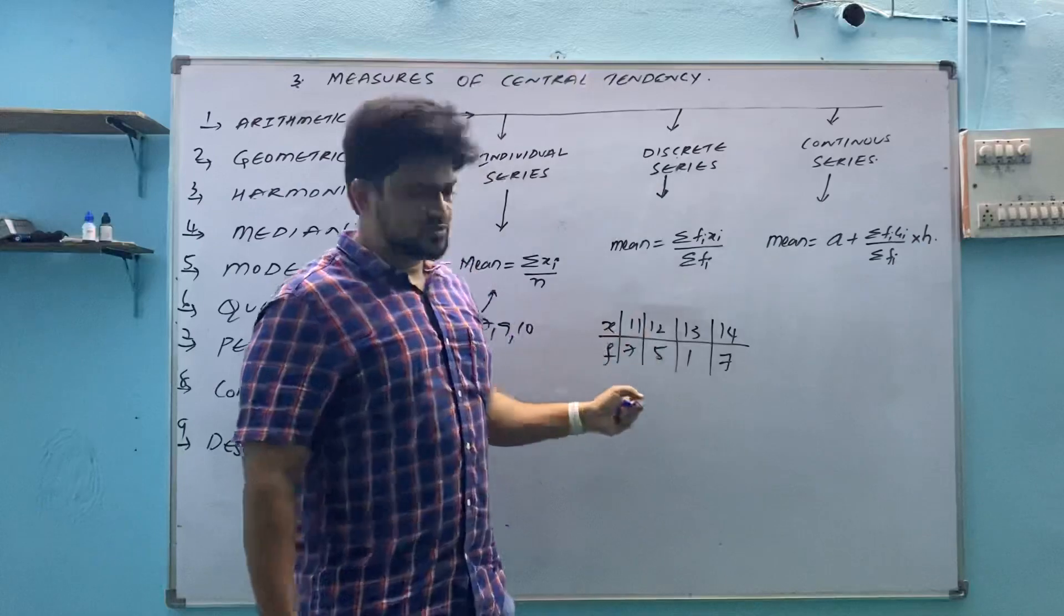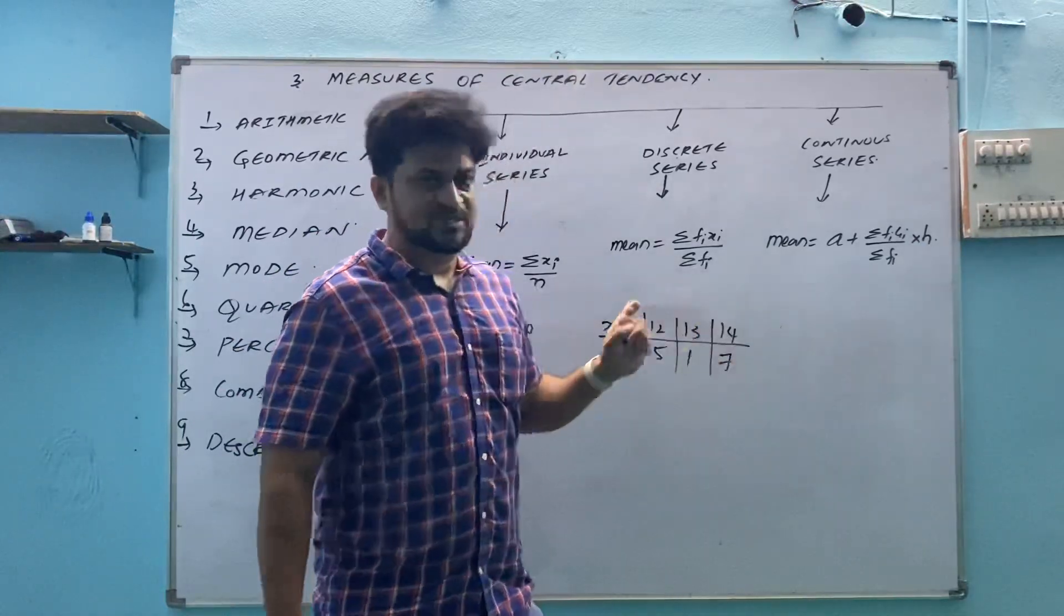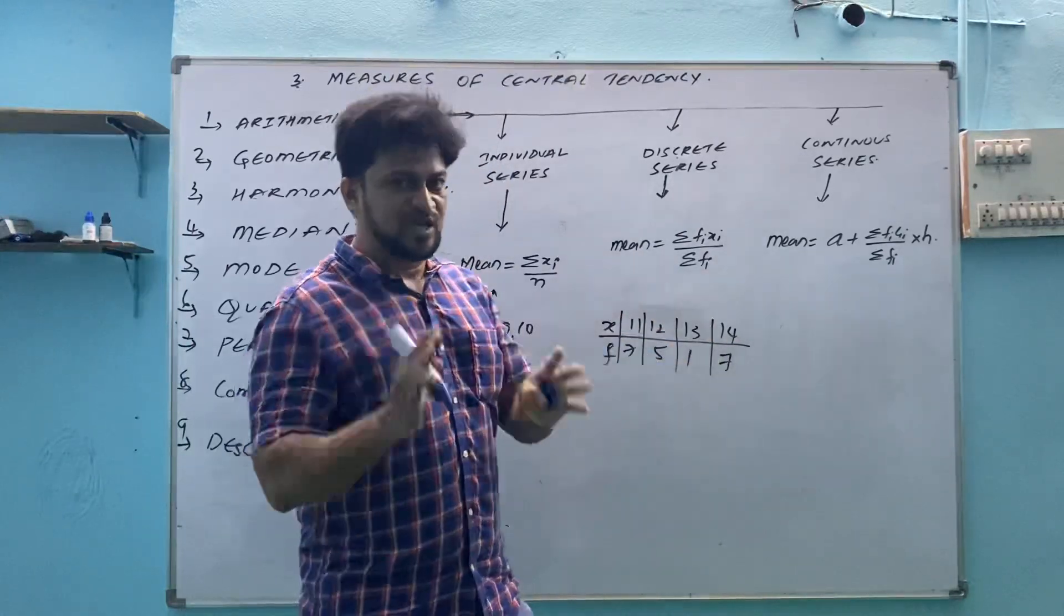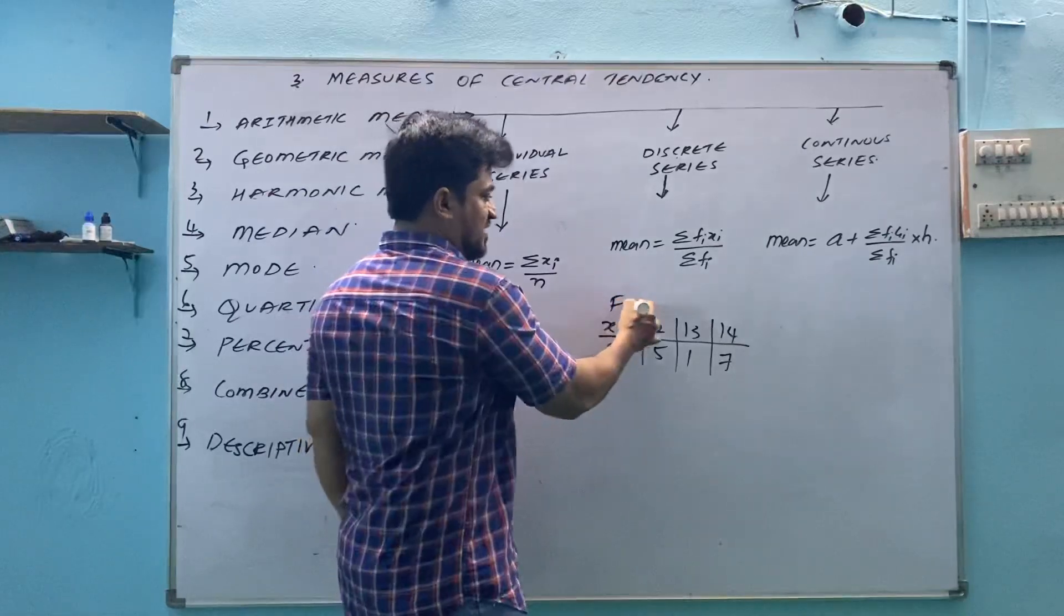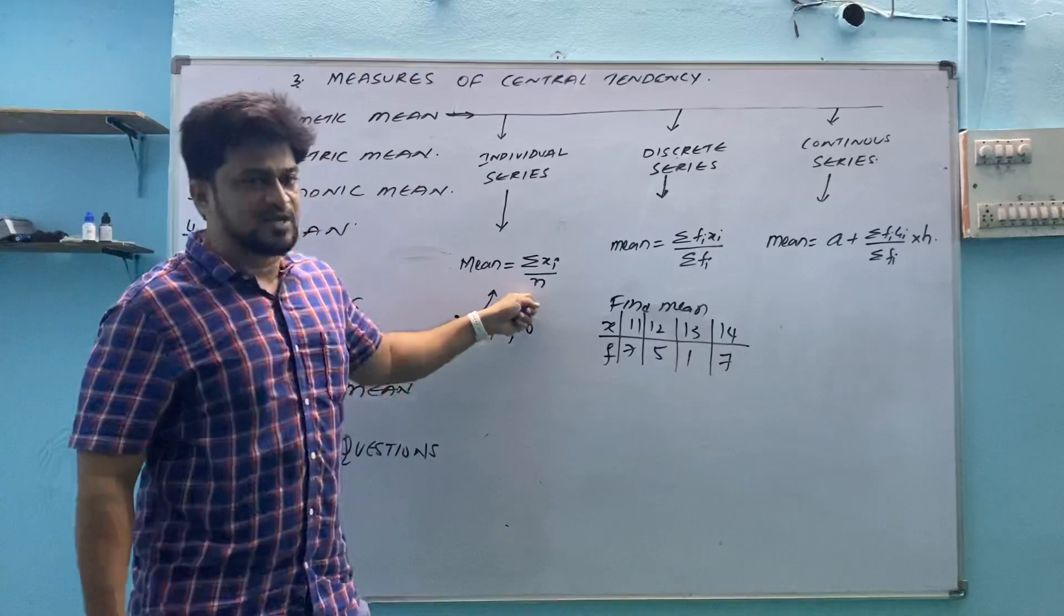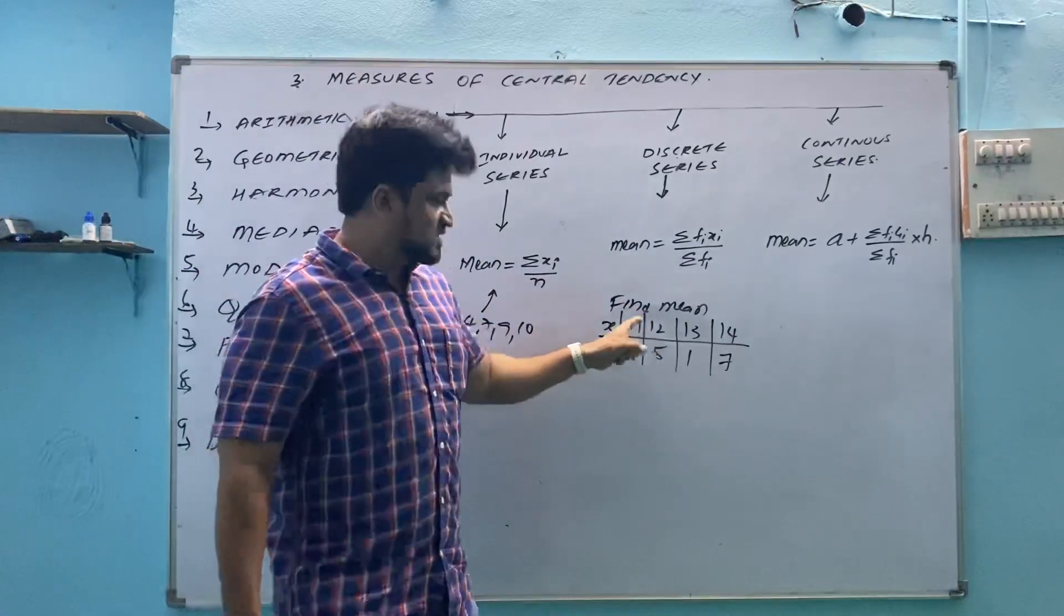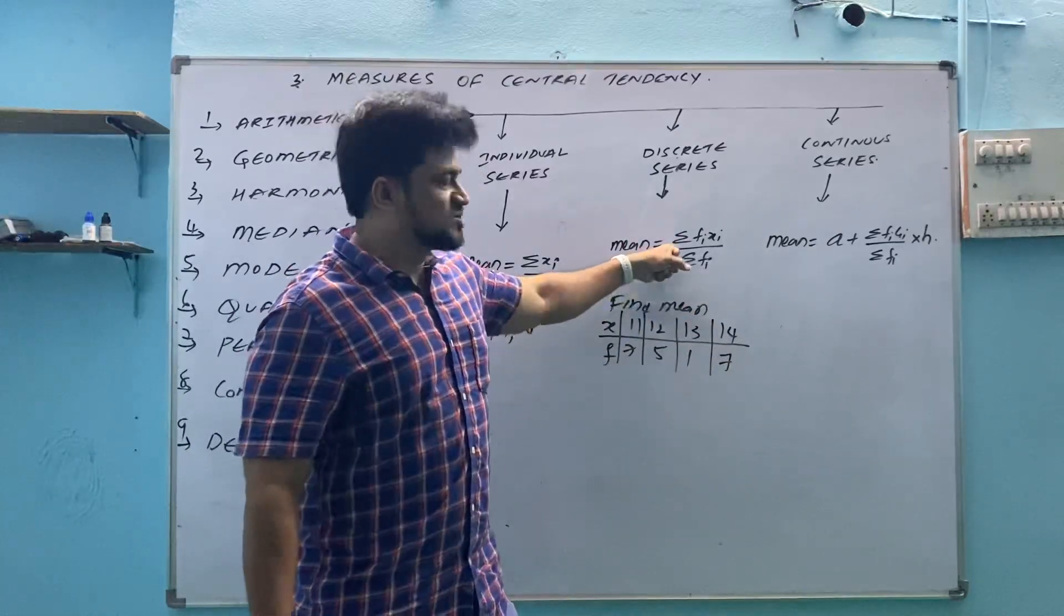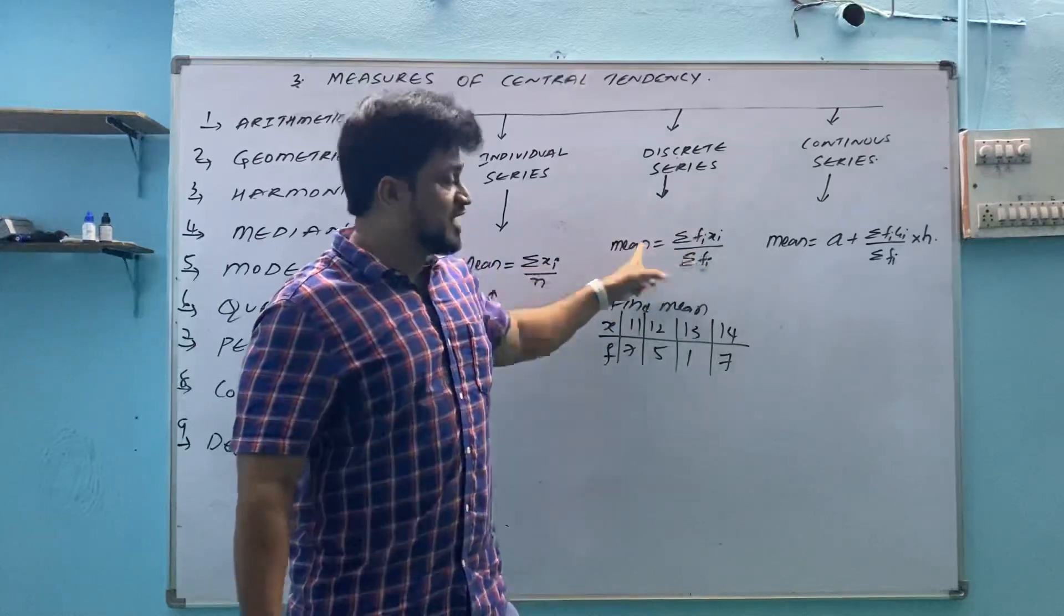11, 7 members, 12, 5 members, 13, 1 member, 14, 7 members. Such type of information or such type of data if you find in question and they will give you find mean of this data. So I can't use this formula. Why? Because this formula represents formula for individual series. If I find such questions, single values, which formula can use? Mean equal to summation of fi into xi divided by sum of fi. How to find this one? At the time of questions, you will get to know.